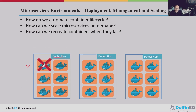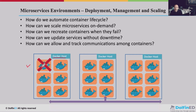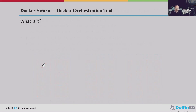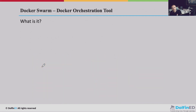How can we recreate containers when they fail, and how can we update services without downtime? How can we allow and track communication among containers spread across multiple Docker hosts? And how can we control where containers are deployed — some servers have more resources than others, so we need to place containers on the right host to balance utilization across all Docker hosts. This brings us to one orchestration tool provided by Docker Inc, which is Docker Swarm.